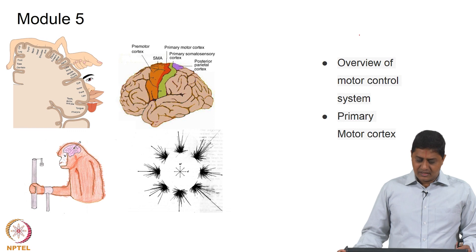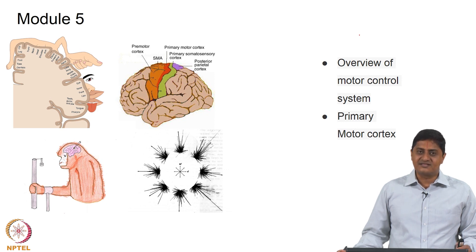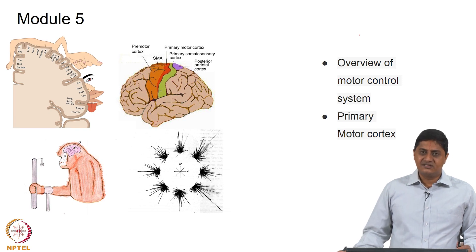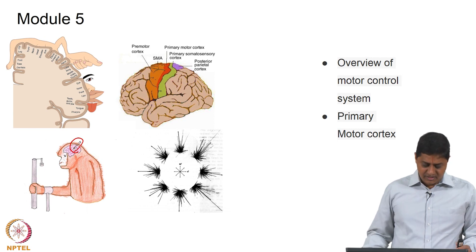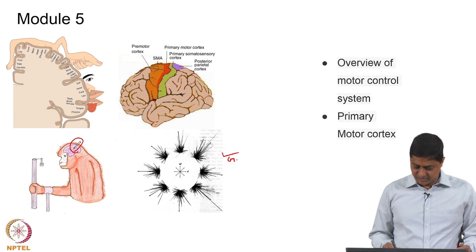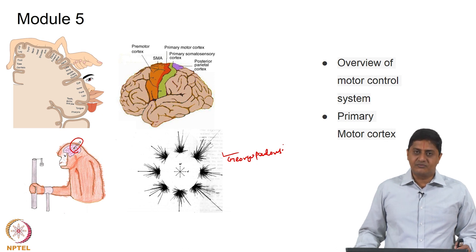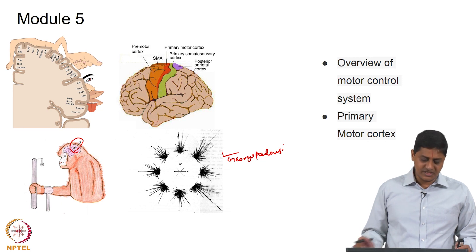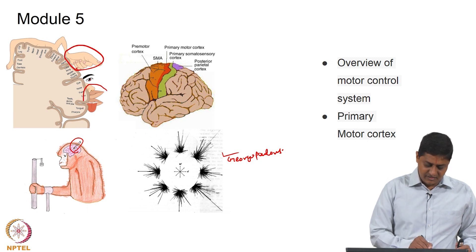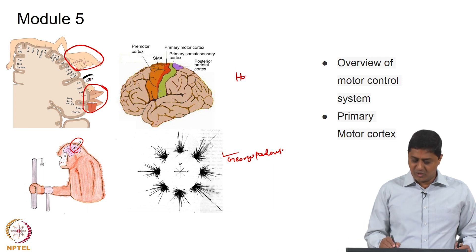In module 5 we will start our discussion of the primary motor cortex and how it makes its choices — what the primary motor cortex considers important, such as magnitude or direction of movement. Several methods concerning the study are also discussed in detail, for example intracortical microelectrode recordings and results from the group of Georgopoulos. We will also discuss how different regions of the body receive different amounts of inputs from the motor cortex — what you see is a disproportionate representation of the hand, finger regions, and face in the so-called homunculus.